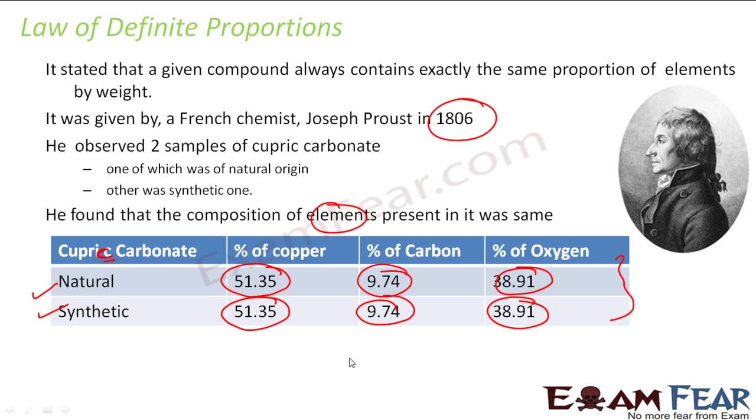So with this, he gave this Law of Definite Proportion saying that you take any compound, any elements, any compound, and then you see this compound will have different elements. For example, water will have hydrogen and oxygen element. So you take any water compound, the composition of hydrogen and oxygen will be same. Similarly, you take any copper carbonate, you synthesize it or you take it naturally, you will see that copper, carbon and oxygen, they have definite proportion. And that is the Law of Definite Proportion. You take any compound and internally you will see that all the elements in this are definite.